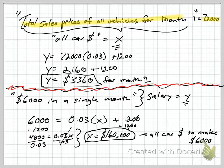So, total sales price of all vehicles for month one, that equates to all car money back from our independent variable and dependent variable. So we know we're plugging that in for x. So we plug it in here, we simplify, and we know that y is $3,360 for month one.